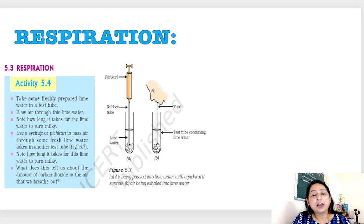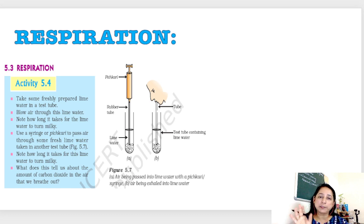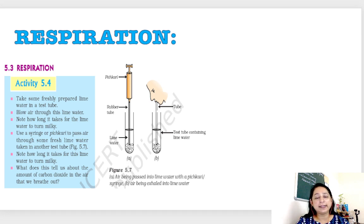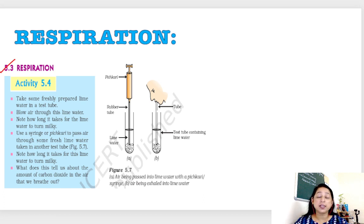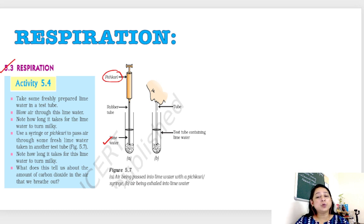Let's start. The topic is respiration — we are taking the blue box and orange or yellow box activities from your book. I have taken screenshots from the book itself. Activity 5.3: there are two test tubes, both containing lime water. In one test tube a pichkari (syringe) is inserted and air is blown in, while in the other, air is blown directly via mouth.